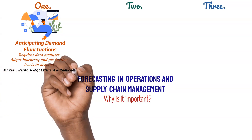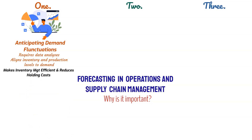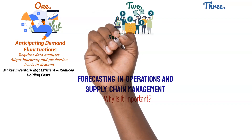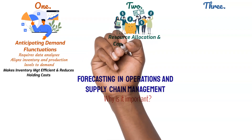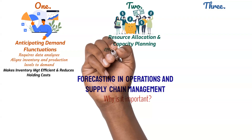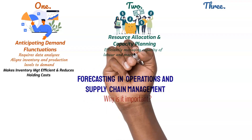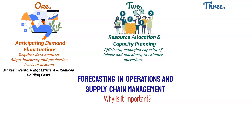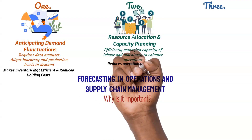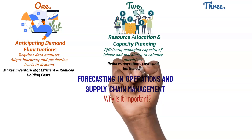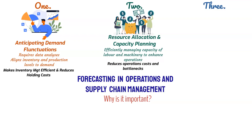Preventing overstocking or understocking issues, accurate demand forecasts are crucial for maintaining efficient inventory management and reducing holding costs. Secondly, forecasting aids in resource allocation and capacity planning. By knowing the expected demand, companies can allocate resources such as labor and machinery more effectively. This prevents resource bottlenecks and allows for optimal utilization, ultimately reducing operational costs and improving production efficiency.